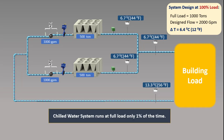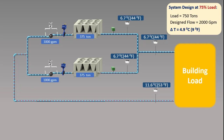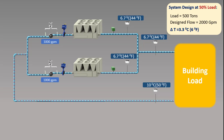Now consider the system running at 75% load: total load is 750 tons and each chiller is supplying 375 tons. The delta T has been reduced — it is now 4.9°C or 9°F — as the return temperature is reduced. This is because in the three-way valve system, when the valve is partially closed, the supply water starts bypassing and results in reducing the return temperature. At 50% load, the load is reduced to 500 tons and each chiller supplies 250 tons. The return temperature is further reduced to 10°C and the delta T has become 3.3°C.